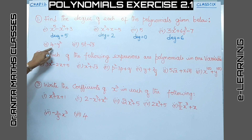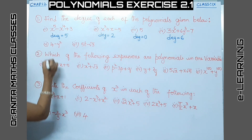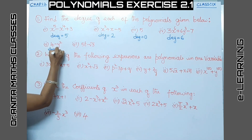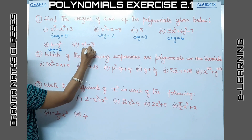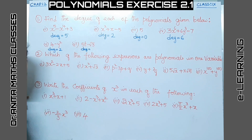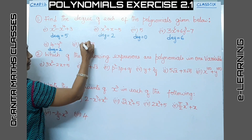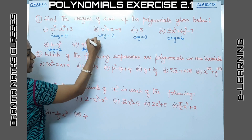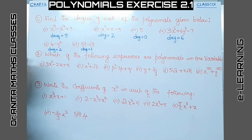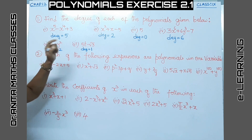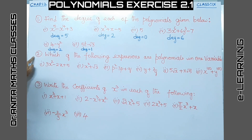The degree of the polynomial 2y² is 2. Here the variable is t and t has power 1, so the degree is 1. Likewise we can write the degrees, which is nothing but the highest power of the variable.